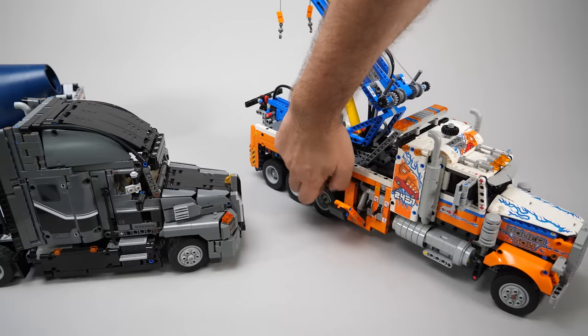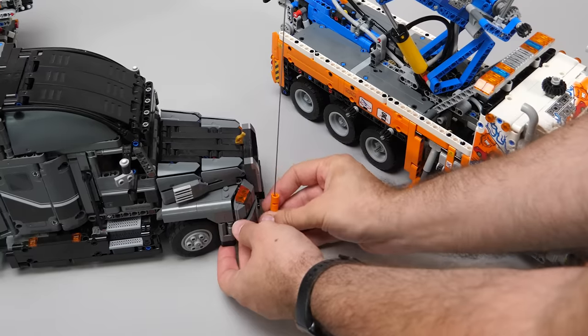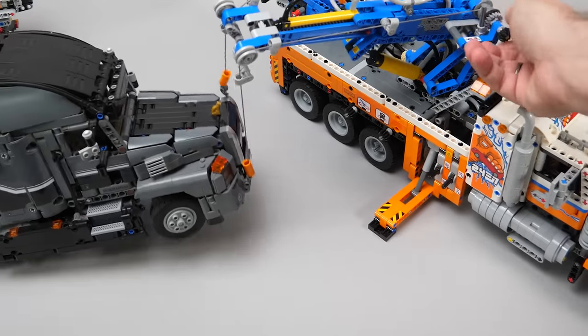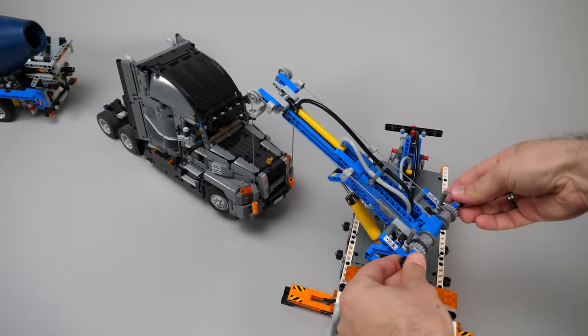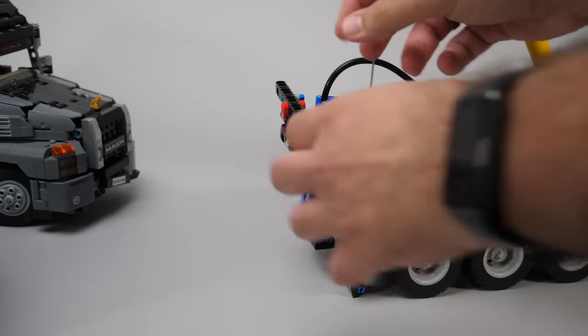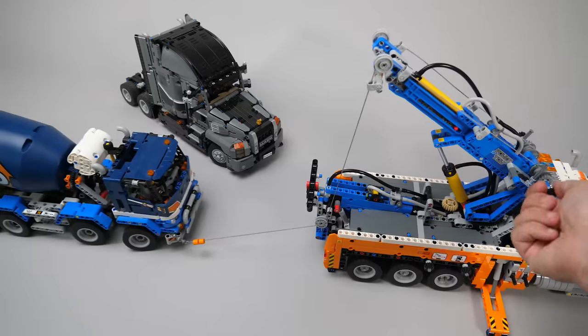Now let's test the recovery boom. We need to deploy the outriggers, safety first, then let's try to lift the mech with one hook first. Well, it does not look good. An attempt with both hooks looks a bit better, but there's still a lot of bending. Another usage of the hooks is through these pulleys at the rear. They work much better this time.